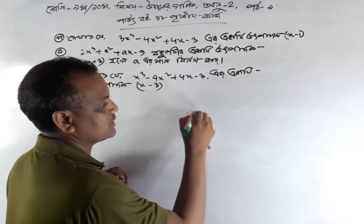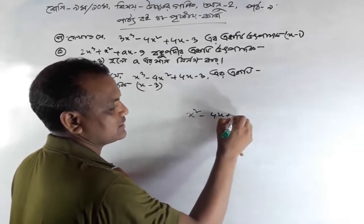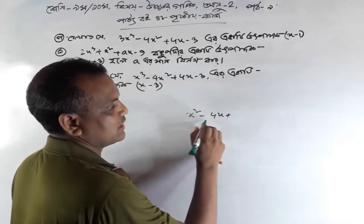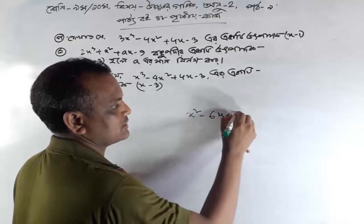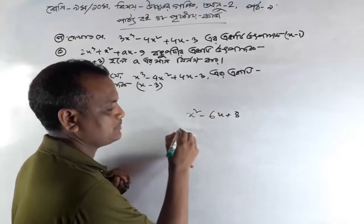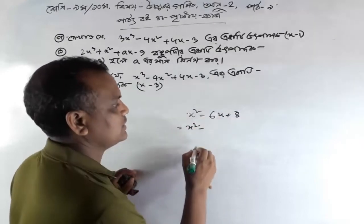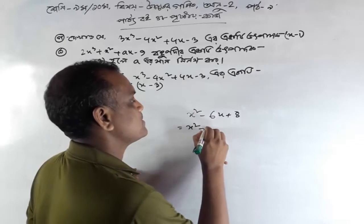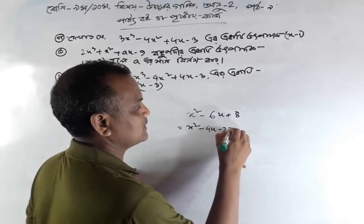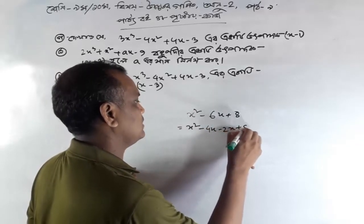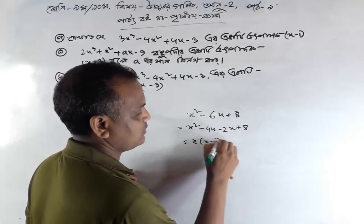So we fill it in. X squared minus four X plus, x squared minus six X plus eight. X squared minus four X plus eight operations.